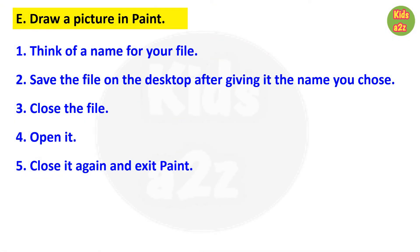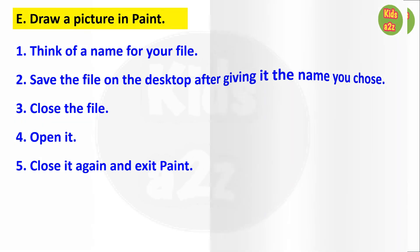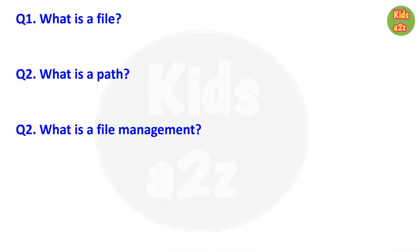For the activity worksheet, kids need to draw a picture in paint, then give a name to their paint file. After giving the name they need to save the file on the desktop, then close that file, open the file again, and finally close it and exit paint. Next question: what is a file? Answer: a file is a collection of data.